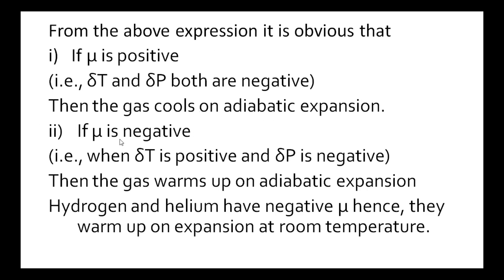Second condition: if mu is negative, this appears when delta P is always negative, so this appears only when delta T is positive. Delta T positive means there is an increase in the temperature of the gas. Therefore, the gas warms up on adiabatic expansion. This takes place only in case of hydrogen and helium. Hydrogen and helium have negative mu values because there is an increase in the temperature — these two gases are warmed up on expansion at room temperature.